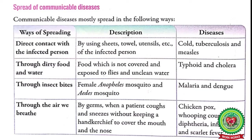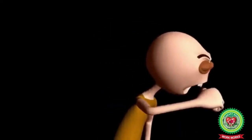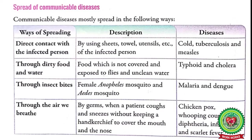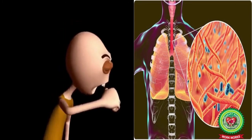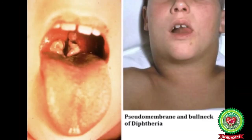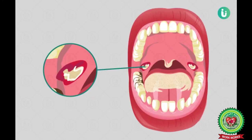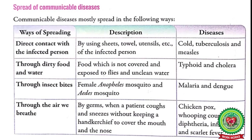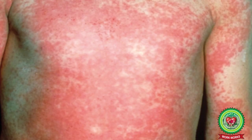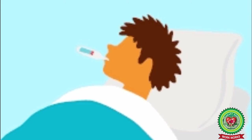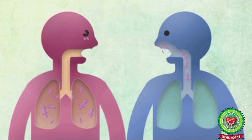Some diseases are airborne. Diseases like chickenpox, whooping cough, diphtheria, influenza, and scarlet fever spread through the air we breathe in. Whooping cough is a dangerous respiratory tract infection and is most harmful for young babies. Diphtheria is a serious infection of the nose and throat. Influenza is a flu that attacks the lungs, nose, and throat. Scarlet fever is a bacterial illness whose symptoms include a bright red rash covering most of the body, a sore throat, and high fever. These diseases spread when a patient coughs or sneezes without covering the mouth and nose with a handkerchief.